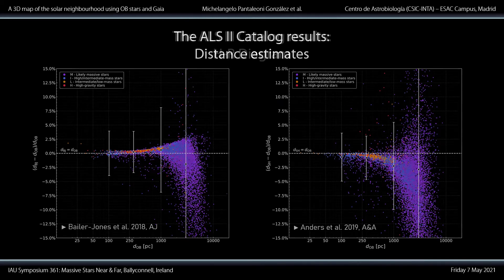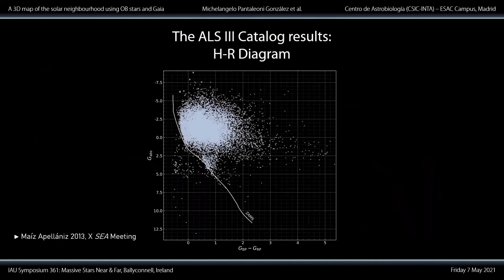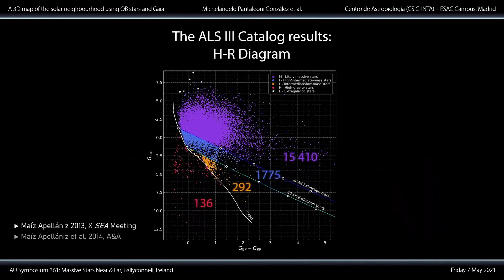We can also make a neat HR diagram with the new ALS using EDR3 data. We divide the diagram into different regions using the zero-age main sequence and extinction flux corresponding to 10,000 and 20,000 Kelvin stars. There are around 100 high-gravity objects below the main sequence — white dwarfs, hot subdwarfs, and others — that slipped through the original ALS. There are also around 300 low-mass stars that should never have been there. After cleaning the sample we are left with 15,000 massive stars plus 1,700 probable cases in the upper left. You can clearly see the desert in the very massive stars close to the ZAMS that Gonzalo talked about yesterday, without considering extinction contributions.